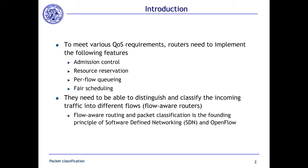Each router performing packet classification is notified that a certain flow will be active by filling a specific entry in a table. This is also the basis of OpenFlow, which is the most common way to implement software-defined networking. OpenFlow switches are basically devices with a packet classification table called a flow table, and they perform specific actions on each packet depending on the classification result.